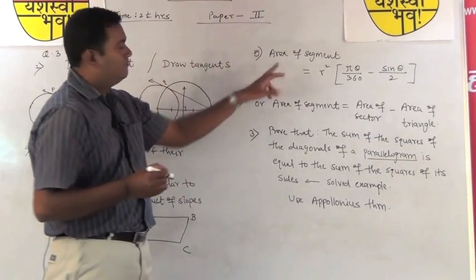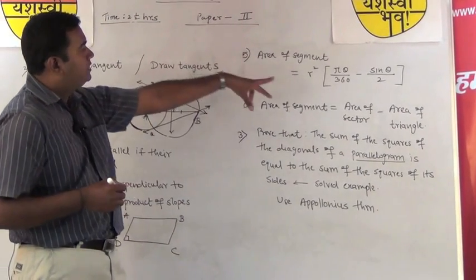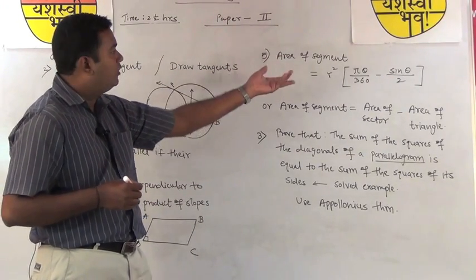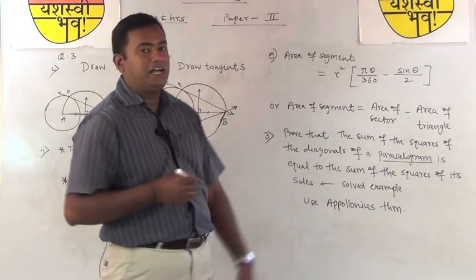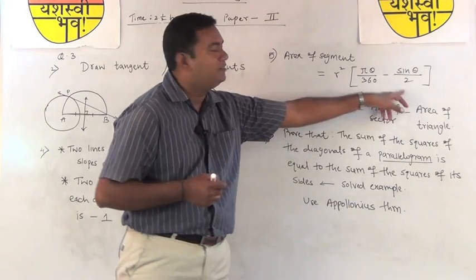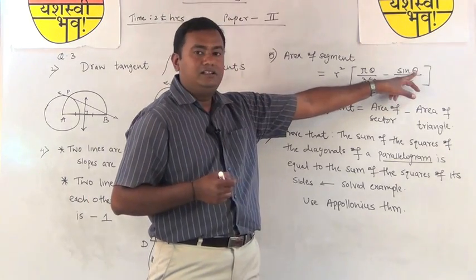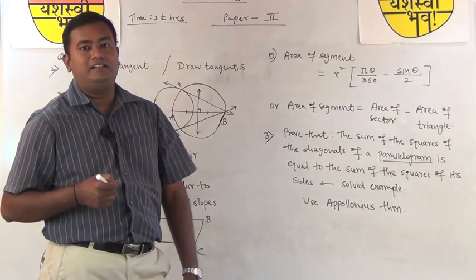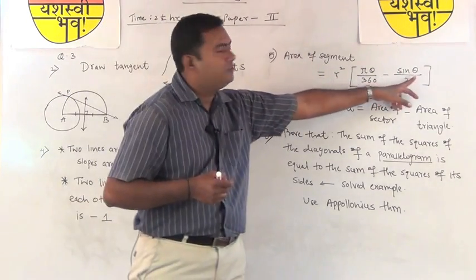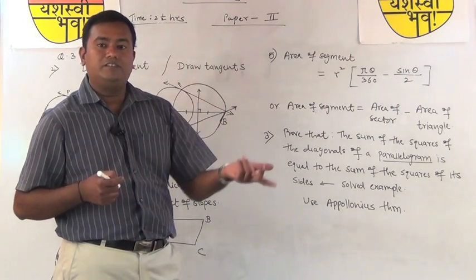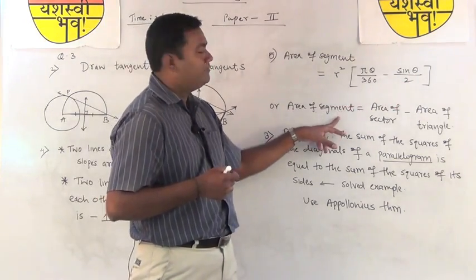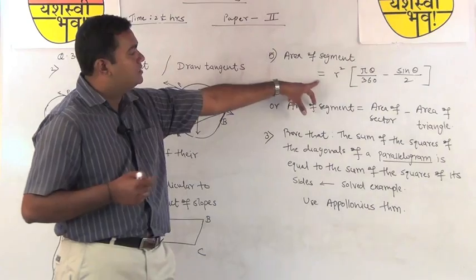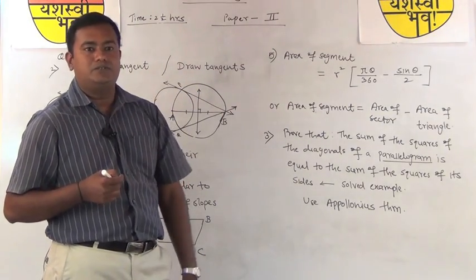The next question is based on mensuration — the radius and central angle theta are given, and we have to find the area of the segment. You can use the direct trigonometric formula: area of segment = r² × (π·θ/360 − sin θ/2). You should know the values of sin 30, 45, 60, and 90. If you prefer not to use trigonometry, you can find area of segment = area of sector minus area of triangle, but that method is lengthier.